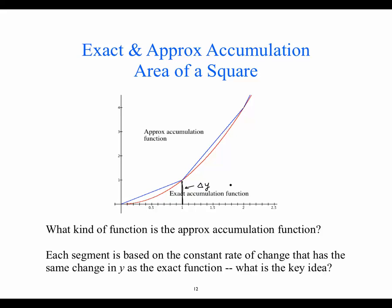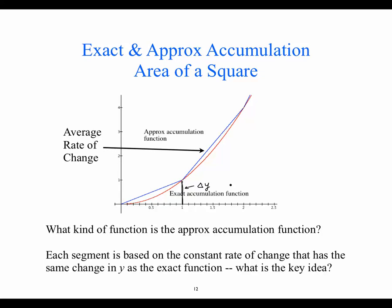What's the key idea? That blue segment is based on the constant rate of change to get the same change in y as the original function. That's average rate of change — the constant rate of change to achieve the same change in output for the given change in input. So building this approximate accumulation function is going to be a matter of calculating and using average rates of change.